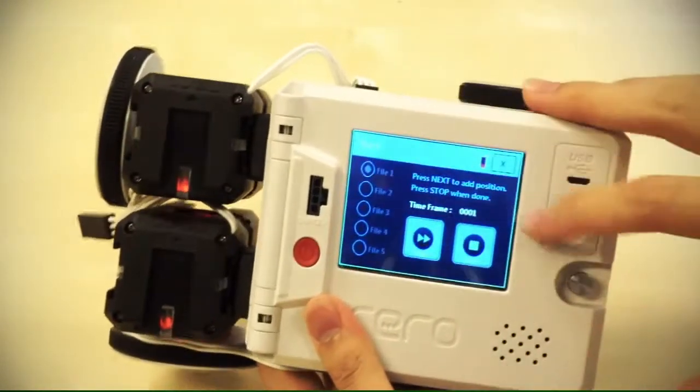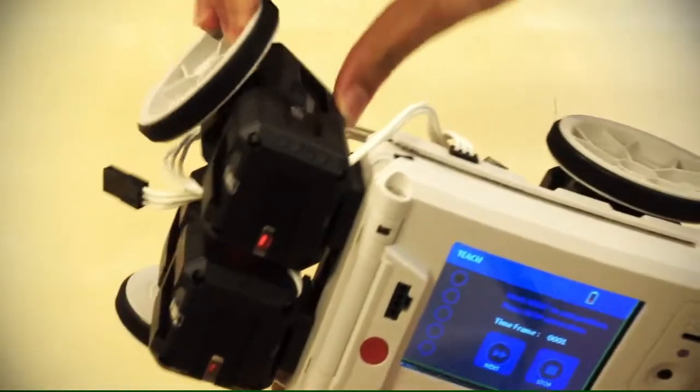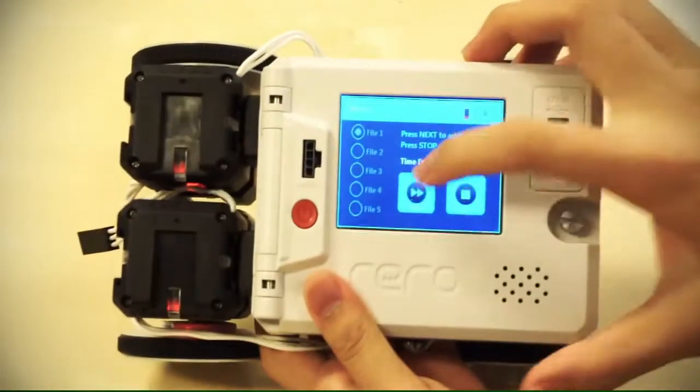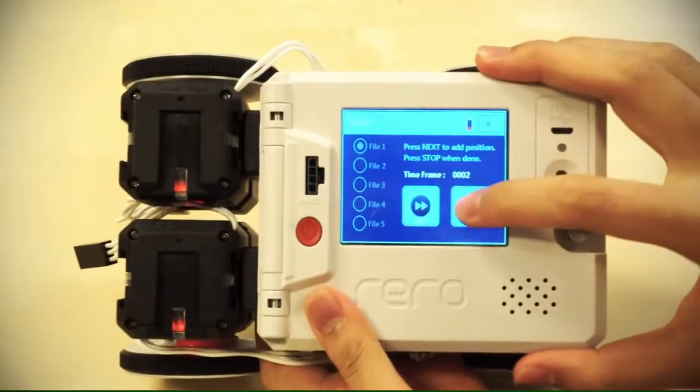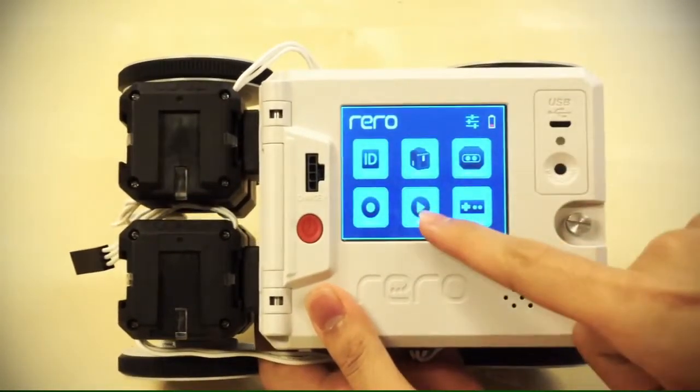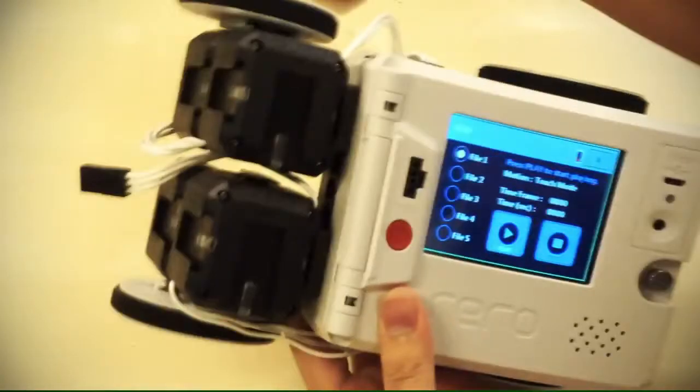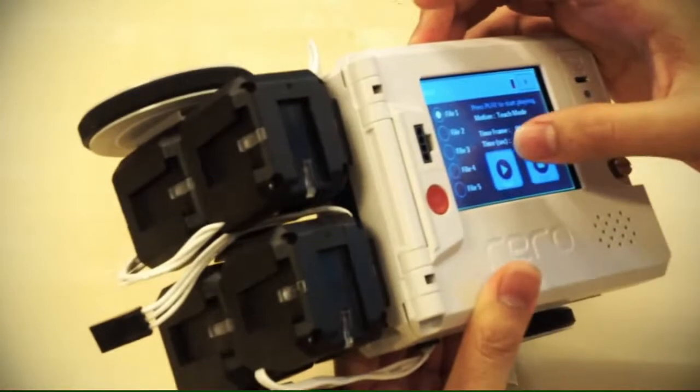Now this is considered the first time frame. That's let's say step one of the program. After that I click next. Now move it back. This is step two. Then I click next. Stop. Now go to play. Then file one. If I click play. It will run the program that I just taught previously.